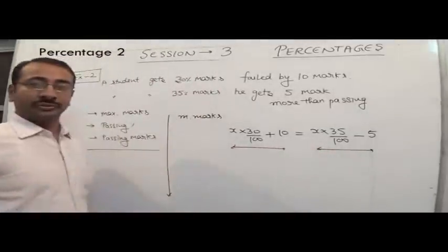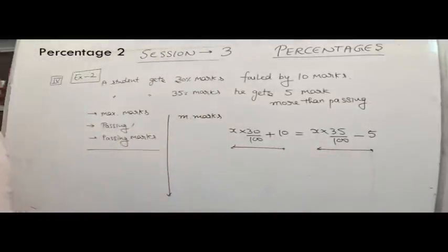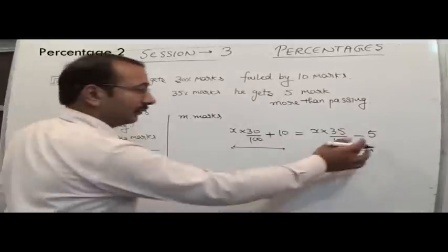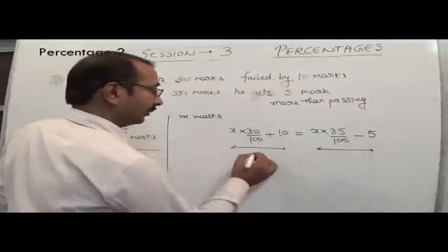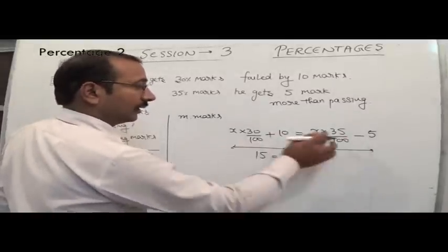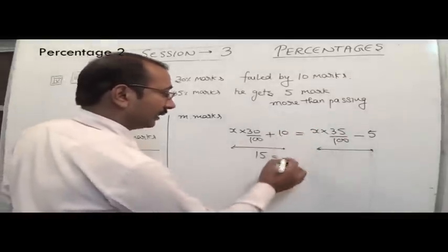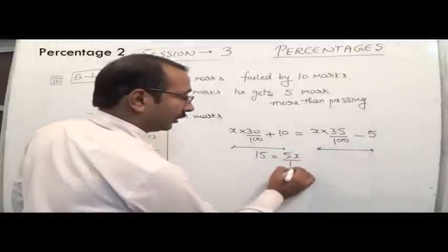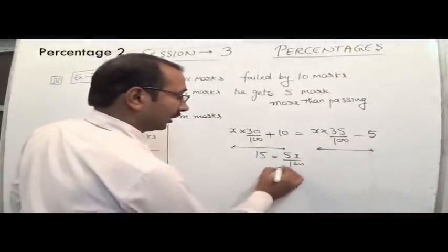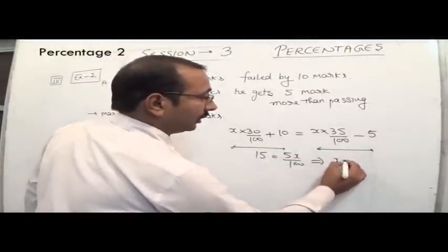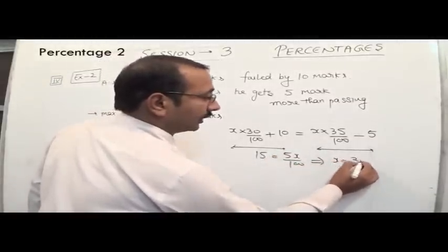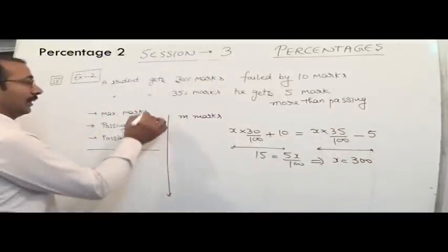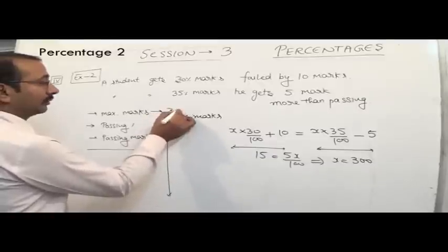We can make a comparison between these two expressions and solve: 5 comes here, 15, this comes here, and subtracting gives 5x/100 = 15, so x equals 300. We can say the maximum marks of the paper will be 300.